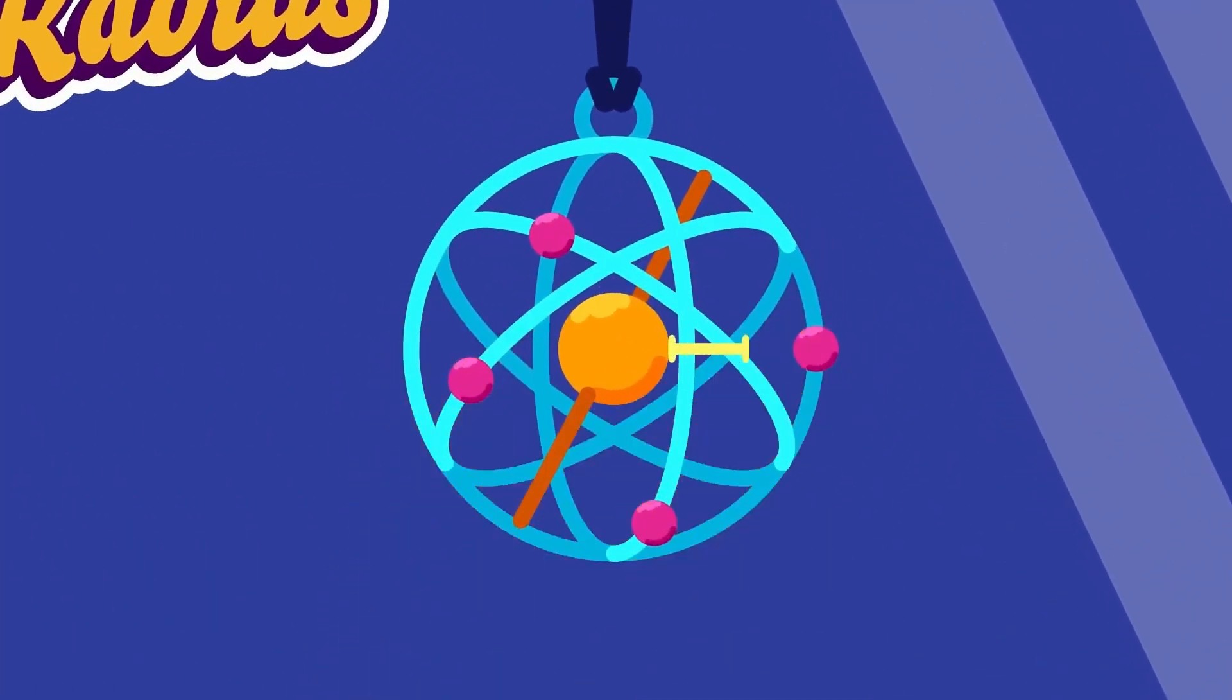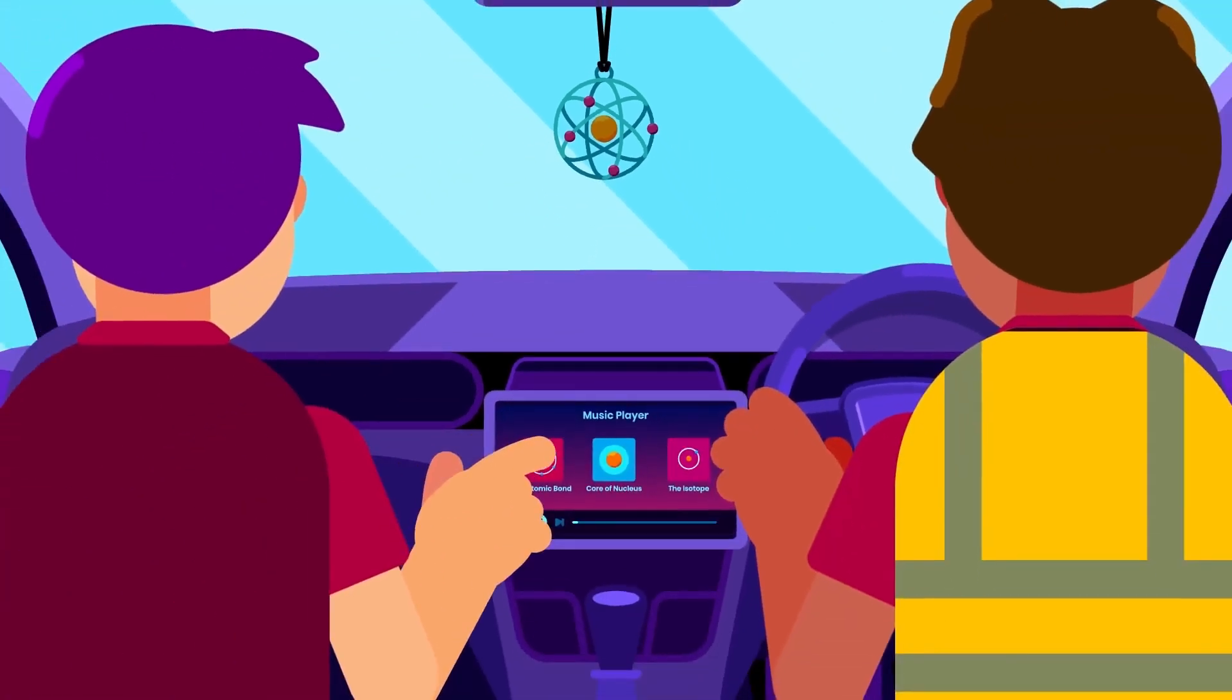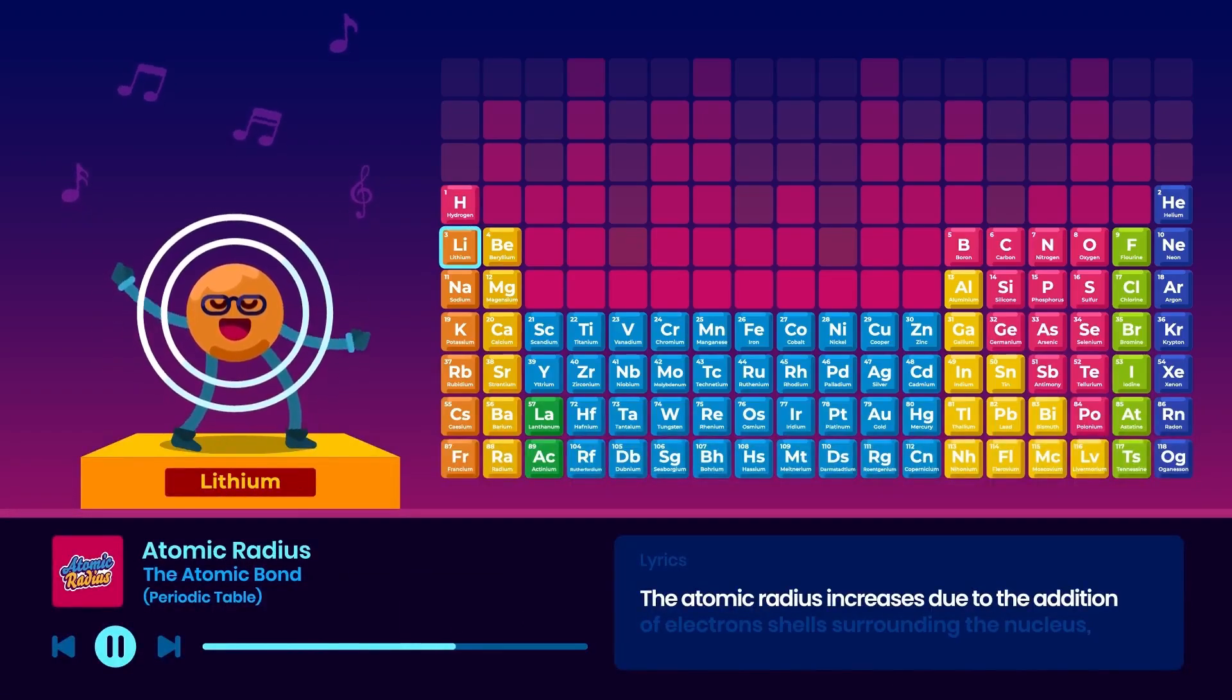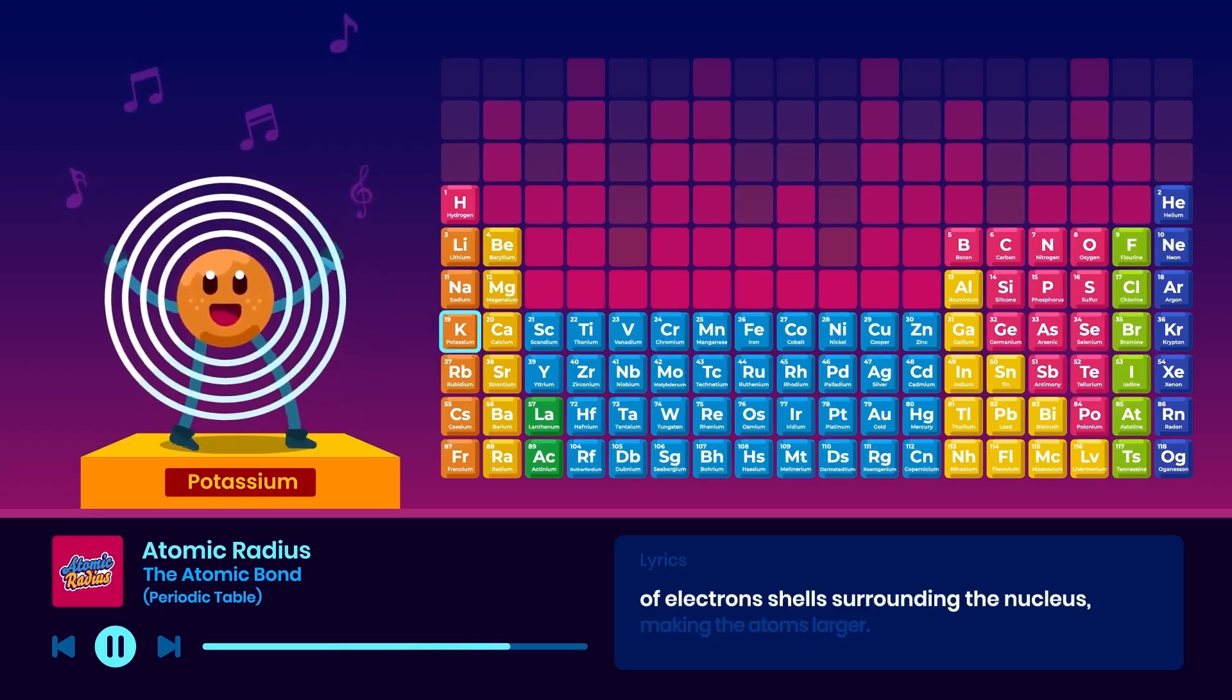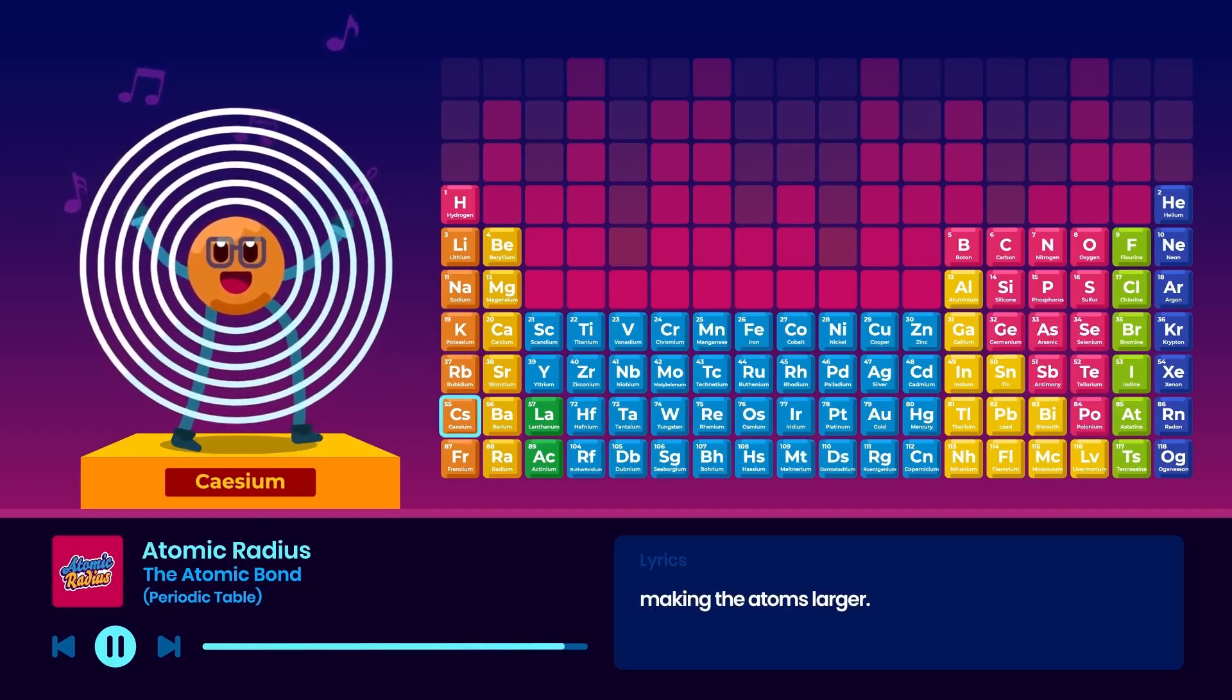Atomic radius is a distance from the nucleus of an atom to the outermost electron orbital. As we move down a group, the atomic radius increases due to the addition of electron shells surrounding the nucleus, making the atoms larger.